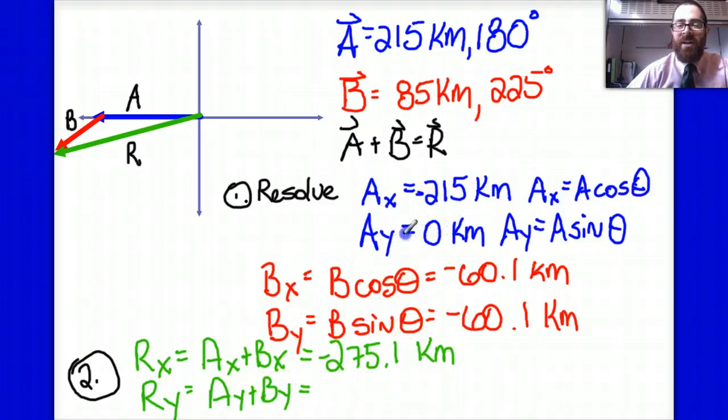My y component is a bit easier again here because the y component of vector A is 0, the y component of vector B is 60.1, so therefore the y component of my resultant is negative 60.1 kilometers. I've finished the first two parts of the problem.